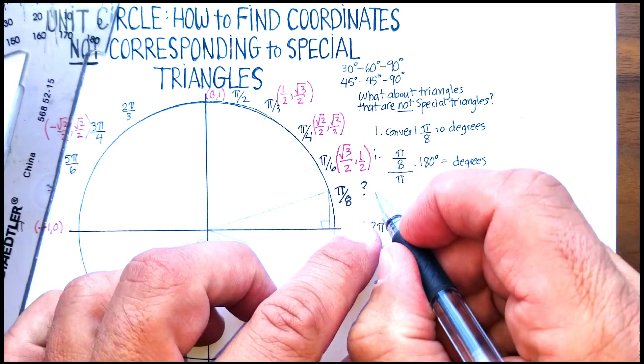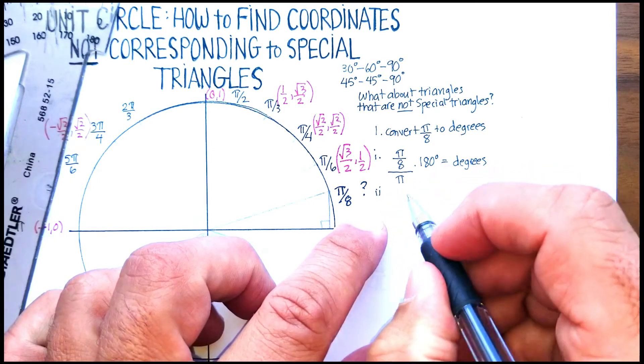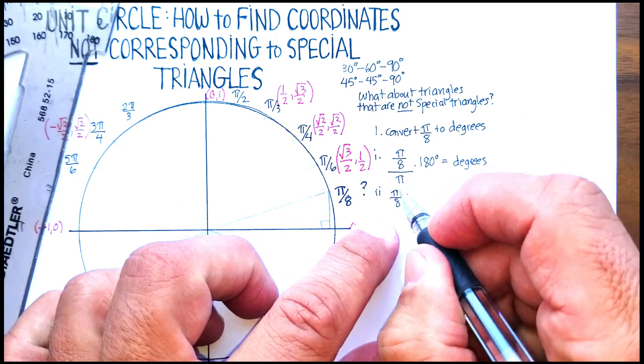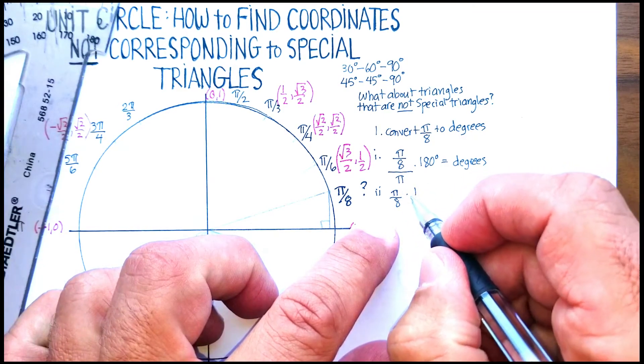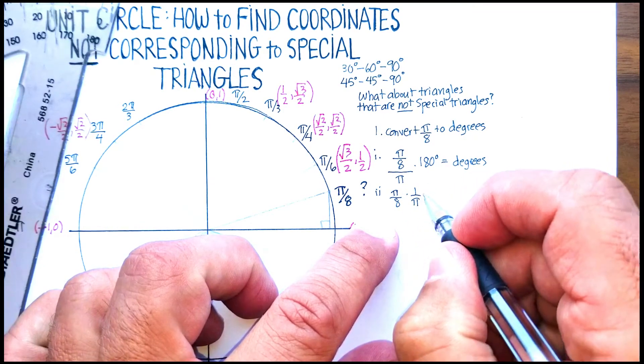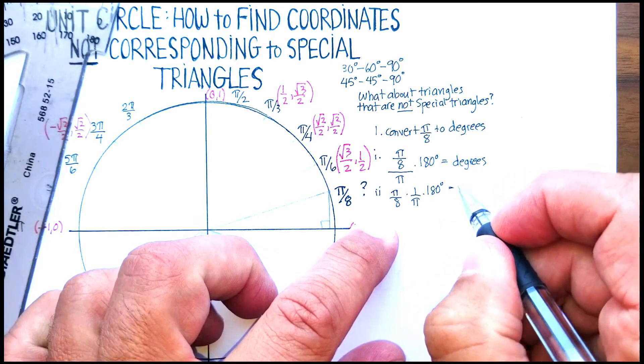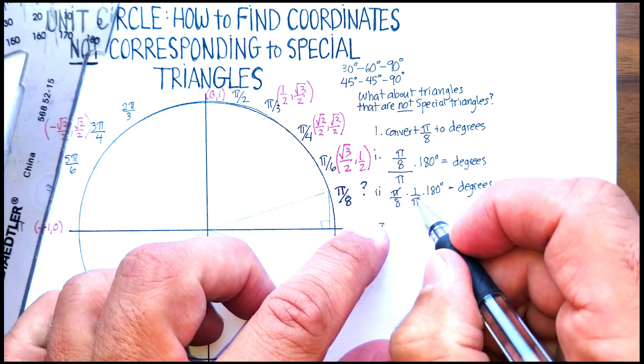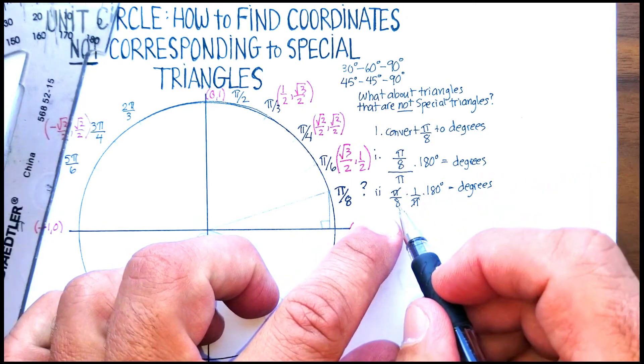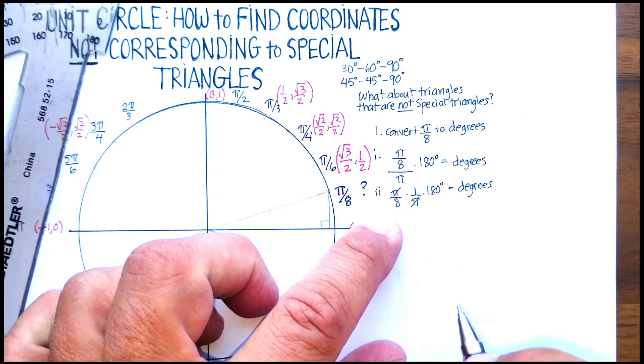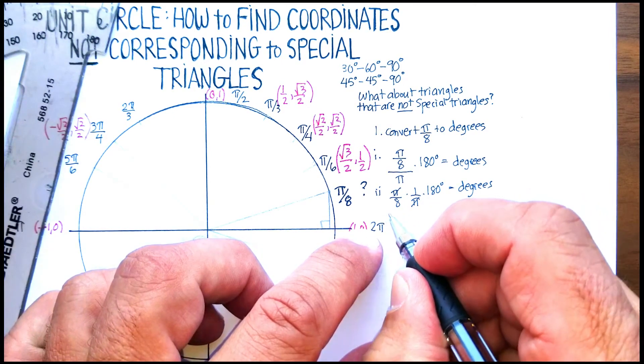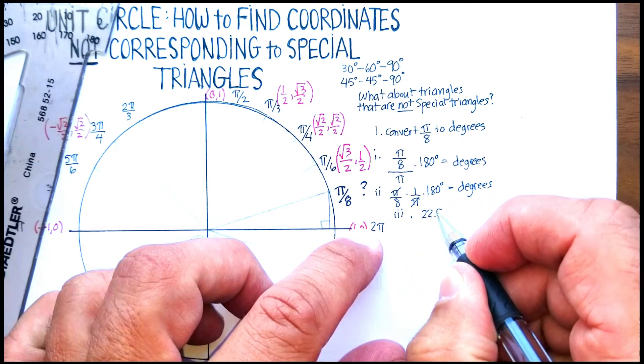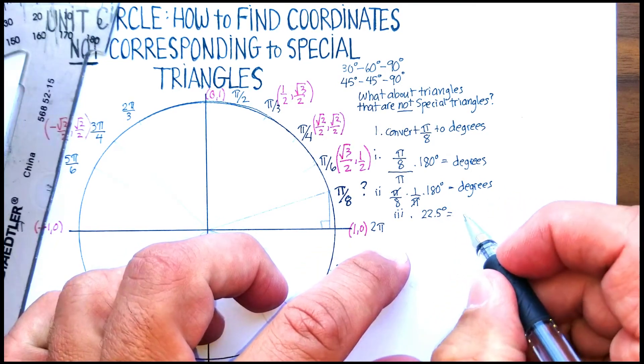So let's go ahead and solve this. Our second step will be π/8 multiplied by the reciprocal, and remember that's just π/1. The reciprocal would be 1/π times 180°—again, that will equal degrees. π's cancel, you'll end up with 1 times 180 divided by 8, and that will end up being our third step: 22.5° will equal the number of degrees.